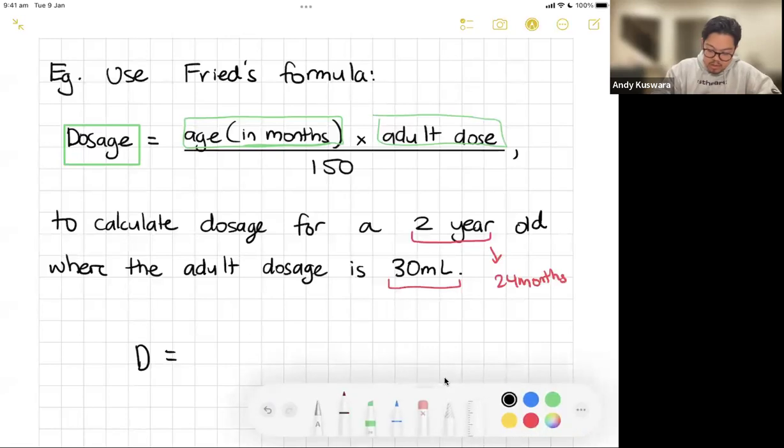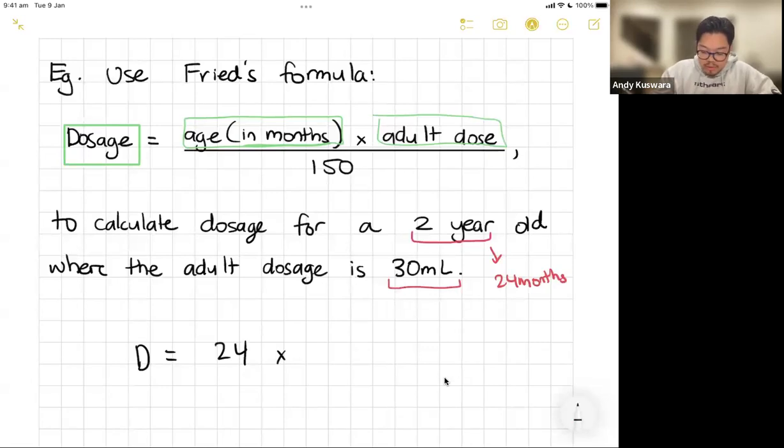Multiplied by the adult dose, and the adult dosage here is 30, okay, given by our question. Put it all over 150, and let's see what that gives us. 24 times 30 all over 150, and you should get 24 on 5, or it'll be something like 4.8.